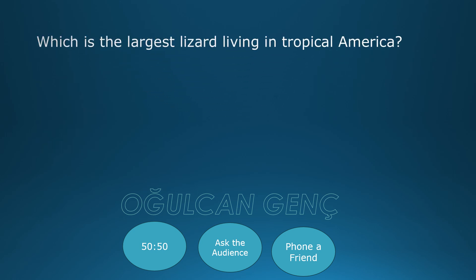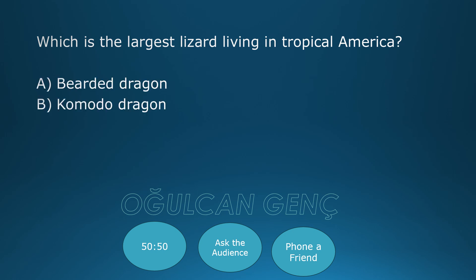Which is the largest lizard living in tropical America? Options: Bearded Dragon, Komodo Dragon, Gila Monster, Iguana. Final answer: Iguana. Correct answer is Iguana.